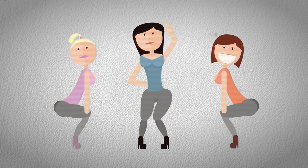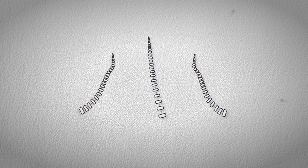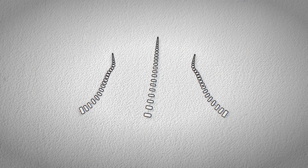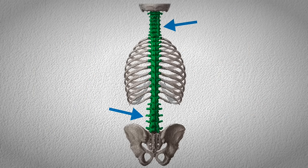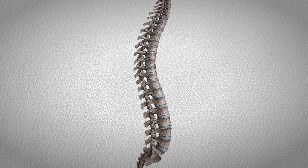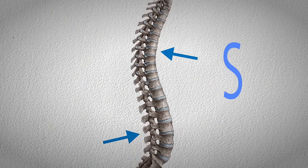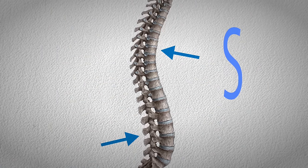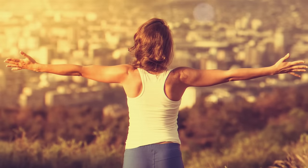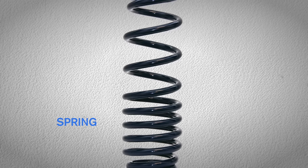Check out those nice spinal curves. This is your spine from the front — you can see it's straight — but from the side you'll see curves, kind of like an elongated S. These curves are crucial for maintaining spinal health throughout your life.